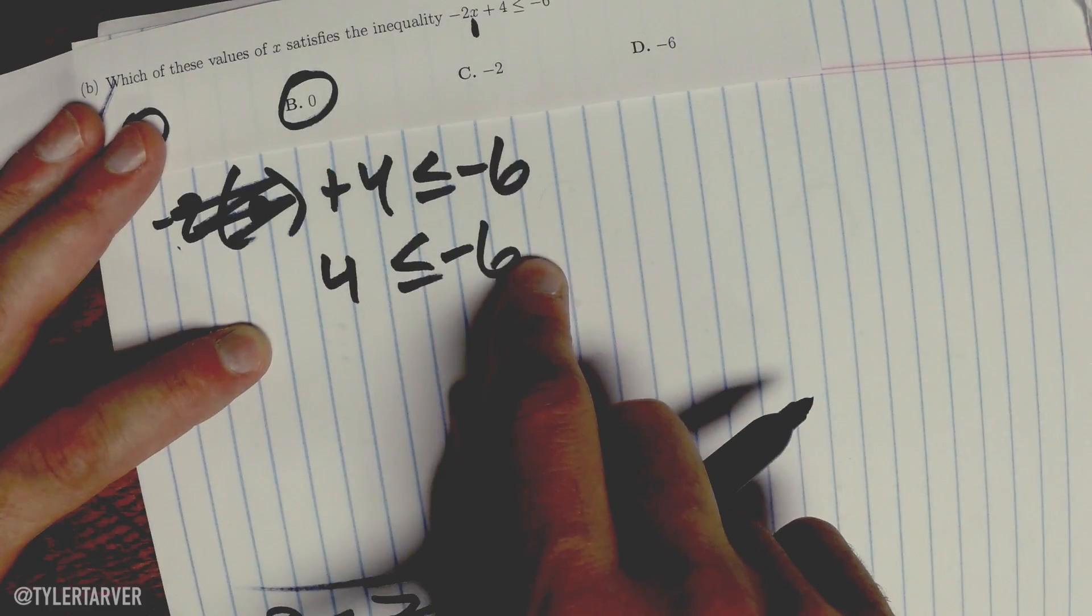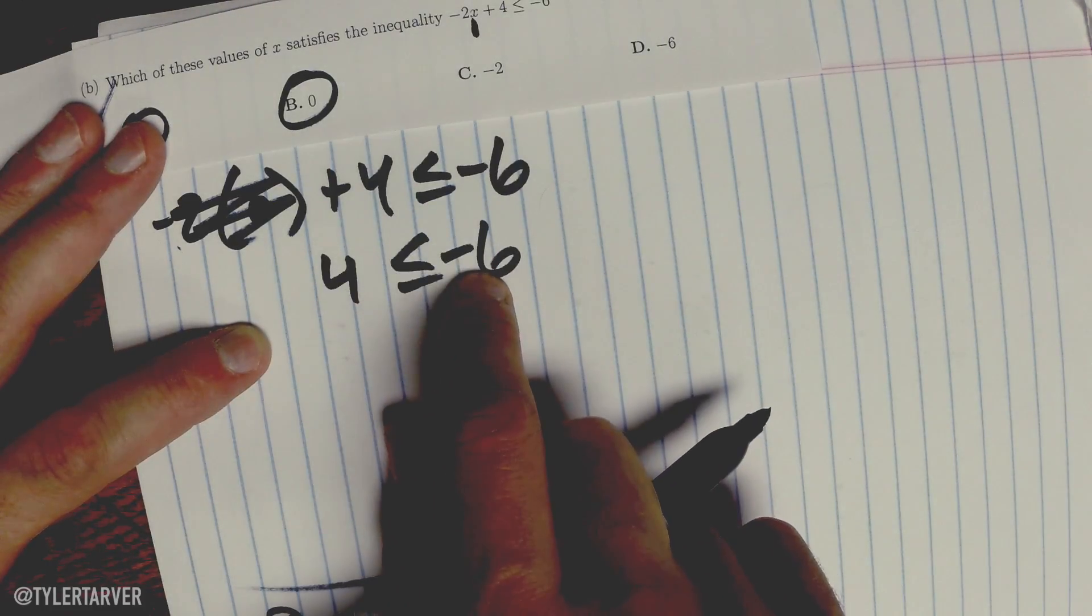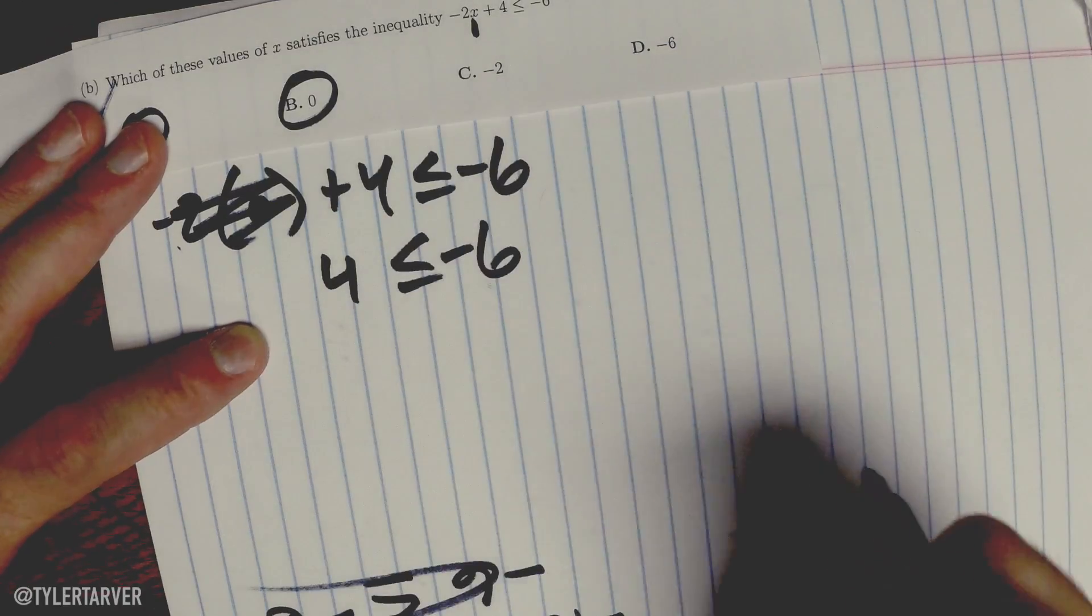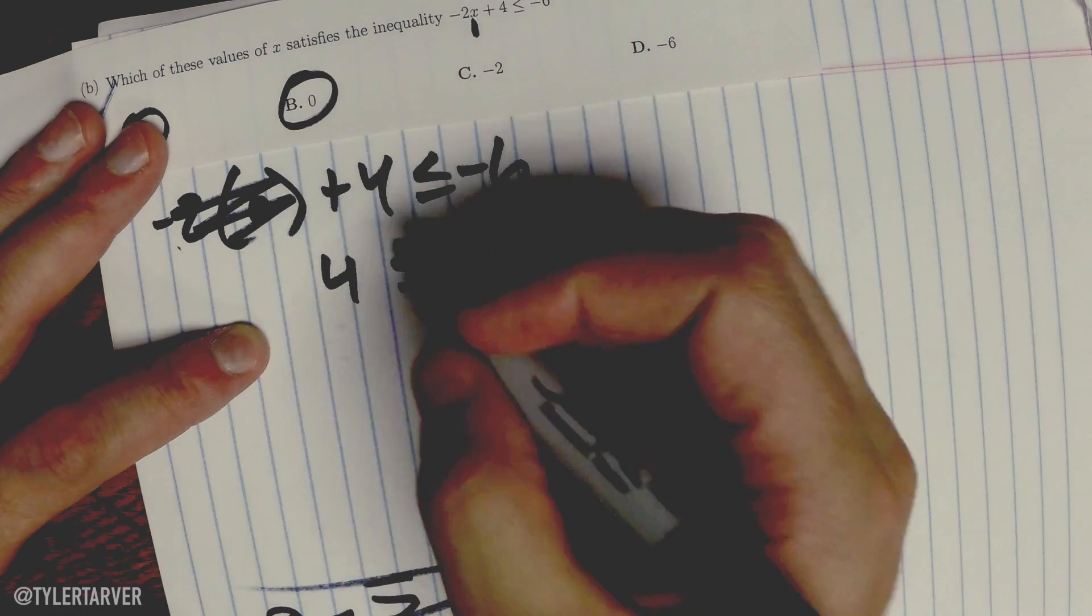4 is less than or equal to -6. Is 4 equal to it? No. Is it less than -6? No, because -6 is a negative, goes underground six feet. 4 is up, so therefore it is not going to work. So we know that doesn't work.